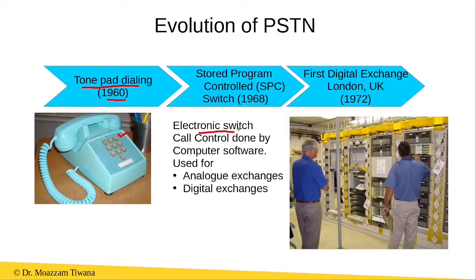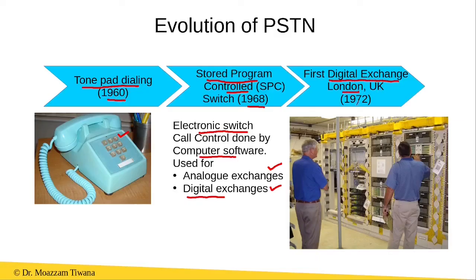Electronic switches were introduced in 1968, called stored program controlled switches, because a computer software was used to connect the calling telephone to the called telephone. These switches were used for both analog and digital exchanges. In analog exchanges, the voice between the calling and called telephone remained analog, while in digital exchanges, the voice is digitized in the exchange. The first digital exchange was established in London, UK in 1972.